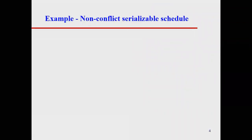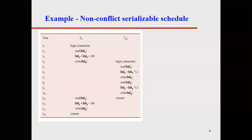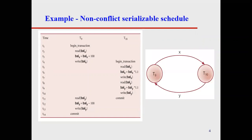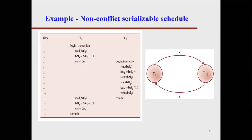We will see some examples now. Look at this one — this is one example of a non-conflict serializable schedule. Can anyone tell me why we call this a serializable schedule and why we call it non-conflict?